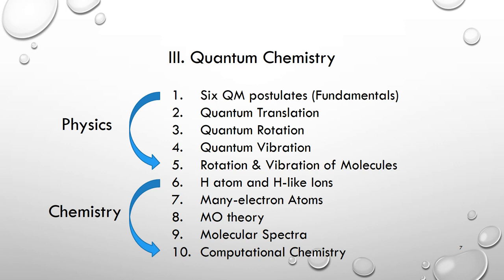In quantum chemistry, there are also 10 chapters. There are two subcategories. The first subcategory is just physics. The second one is chemistry. In the first subcategory, we have the fundamentals first: the six quantum mechanical postulates, followed by quantum translation, rotation, and vibration. And then, the combination of rotation and vibration of molecules. We neglect the translation of the molecules because the translation spacing is negligible. And then, we do chemistry. We start from atoms. These two chapters are about hydrogen atoms and all other atoms. And then, molecules. We introduce two different molecular orbital theories, the symmetry adapted versus localized MO, followed by molecular spectrum. And finally, we do some computational chemistry.